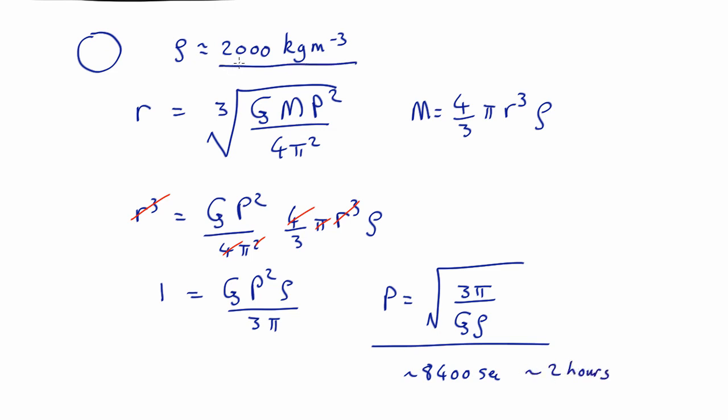So for an asteroid of this density, you don't expect it to have a period of less than about 2 hours, otherwise it would fling itself to pieces. If you see something spinning faster than that, it either has to have a higher density or it has to actually be solid so that things can't fling off because they're held together by chemical bonds.